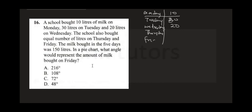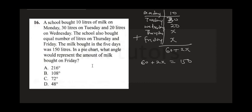Thursday and Friday bought equal amounts, so let's call each X. Summing up: 10 plus 30 is 40, plus 20 is 60. So total milk is 60 plus 2X. They said total milk in 5 days was 150, so 60 plus 2X equals 150.